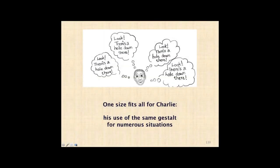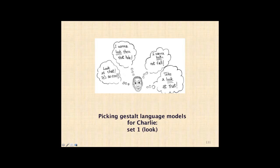For Charlie, he used the very same utterance every single time he was on top of our loft: 'Look, there's a hole down there.' Sometimes he seemed kind of happy about it, sometimes he didn't. So this was what we did.